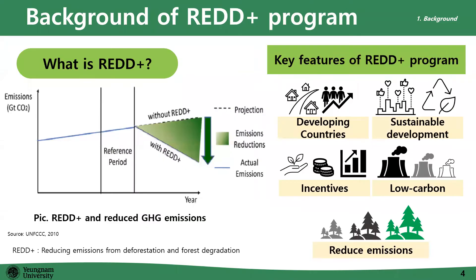Against the climate change problem, a long-term and systematic mechanism was initiated: REDD+, Reducing Emissions from Deforestation and Forest Degradation. It is well known as a mechanism which has the potential to reduce 30% of carbon emissions, and also known as a cost-effective program which can provide community development.